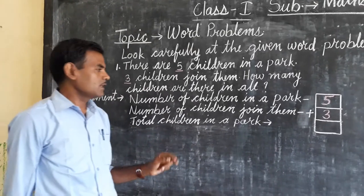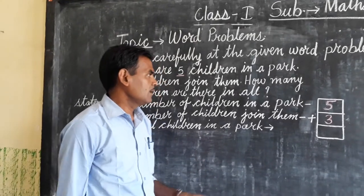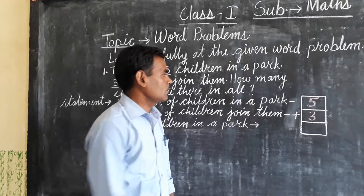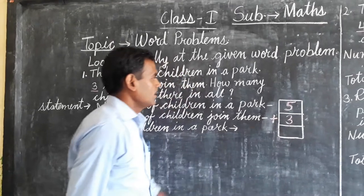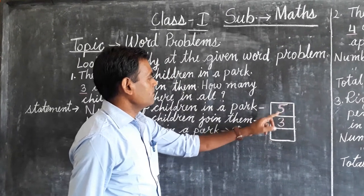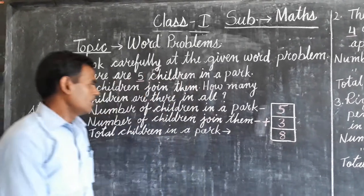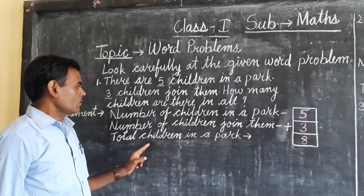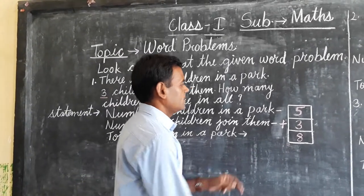There are five children in a park. So what do we need to do — plus or minus? We need to add plus. 5 plus 3 is equal to 8. You write here 8. Total children in a park.